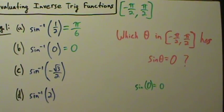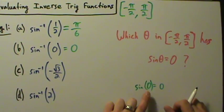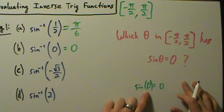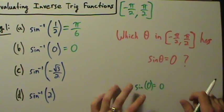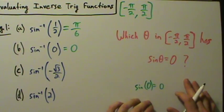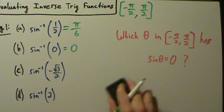Just like before, there are infinitely many values whose sine is zero — for example pi, 2 pi, negative pi, negative 2 pi, and so on — but none of those are inside the interval from negative pi over 2 to positive pi over 2. The only one inside this interval is zero. So we have to be careful to pay attention to the range of the inverse sine function.